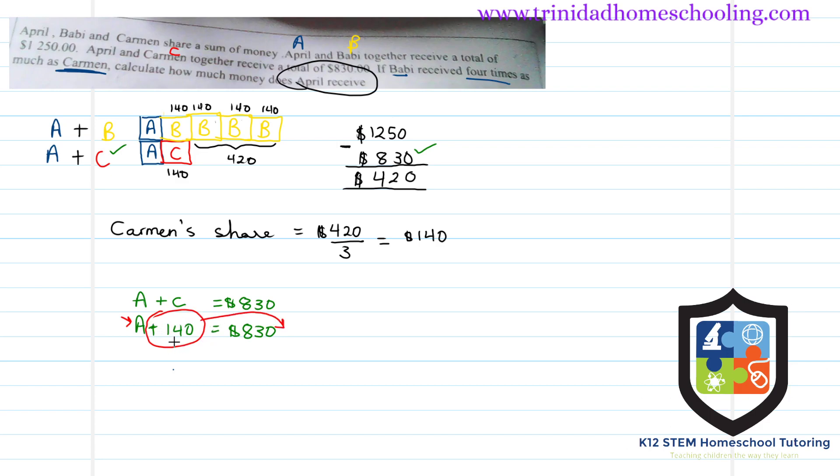In our lessons and previous solution videos, if we wanted to find this unknown, we will move this across to this side and do the inverse operation. The inverse of addition is subtraction, so we're going to subtract $140 from $830, and this will give us April's share of $690. That's the answer.